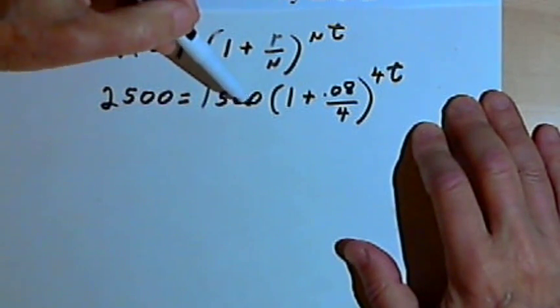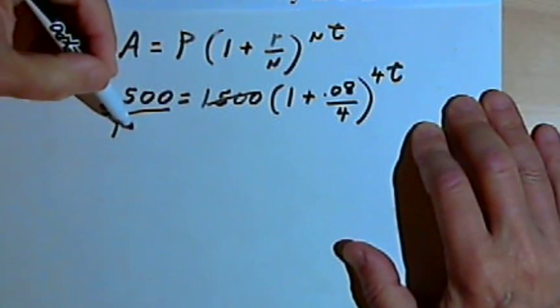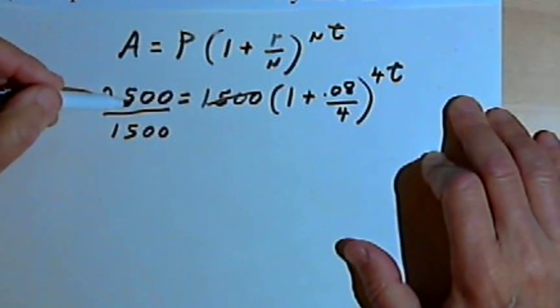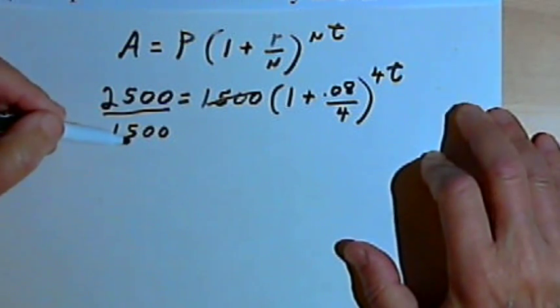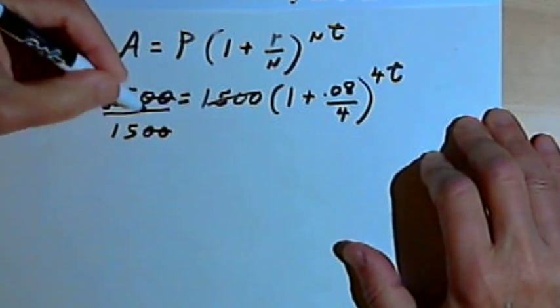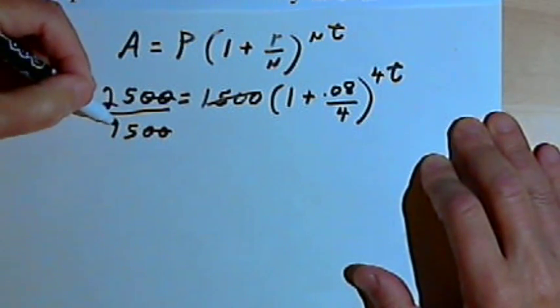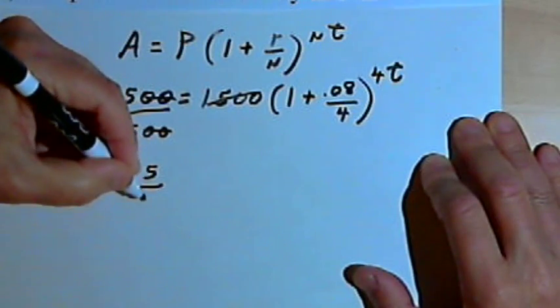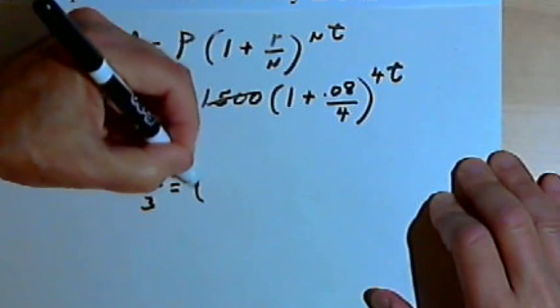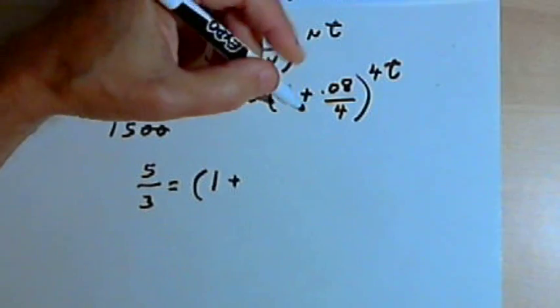The first thing I'll do is divide both sides of the equation by 1,500. So on the left I've now got 2,500 over 1,500. Let's reduce that fraction. I'll divide the numerator and the denominator by 100. And then I have 25 over 15. I can divide both of those numbers by 5. So I'll get 5 over 3 equals...